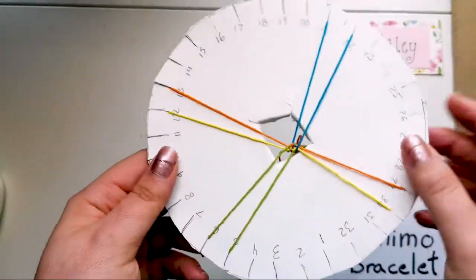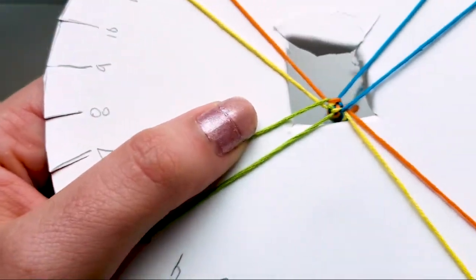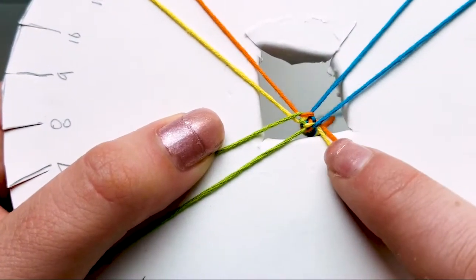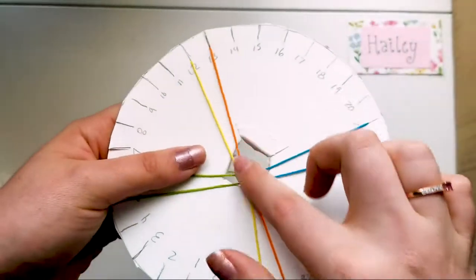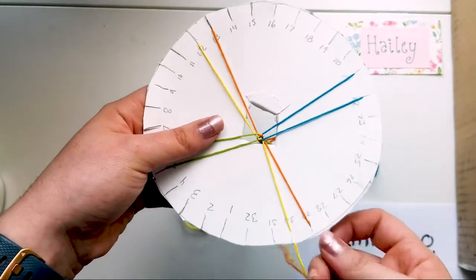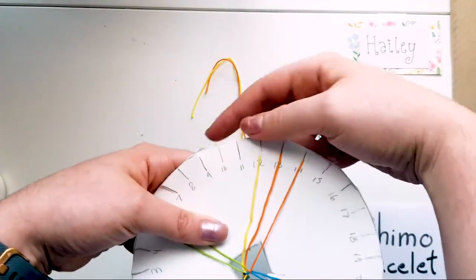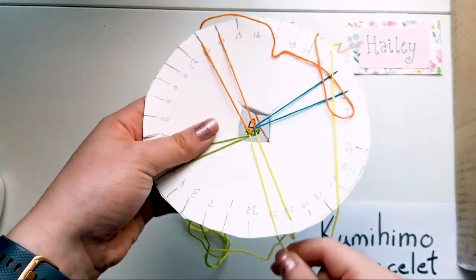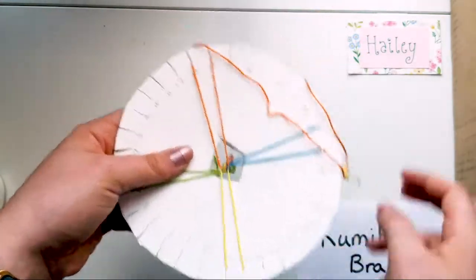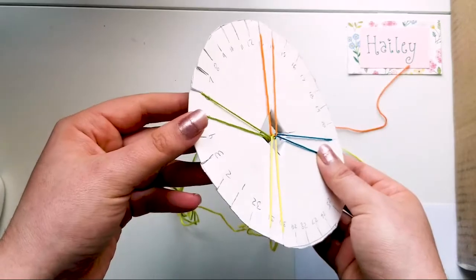The way to tell which direction you did last is if you look real closely, see how the blue string is on top here, and the green string's on there. So that means I need to do these orange and yellows next. So I go orange string, 13, 14, yellow string from 30 to 31. And just kind of keep going.